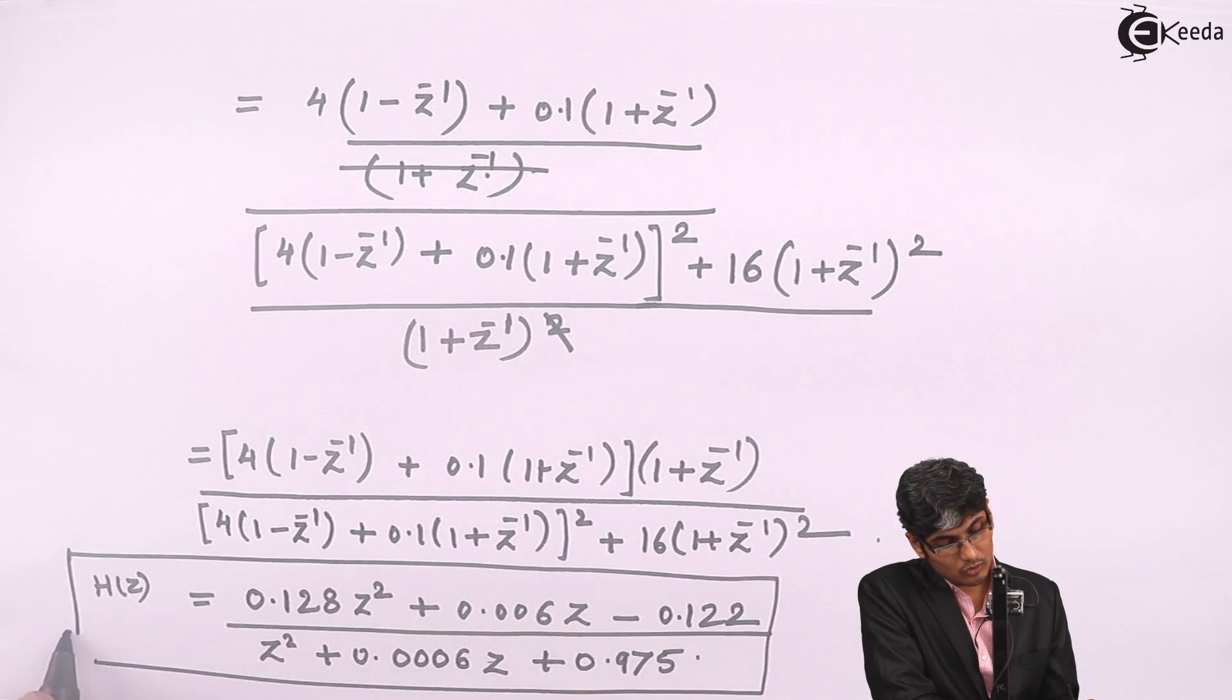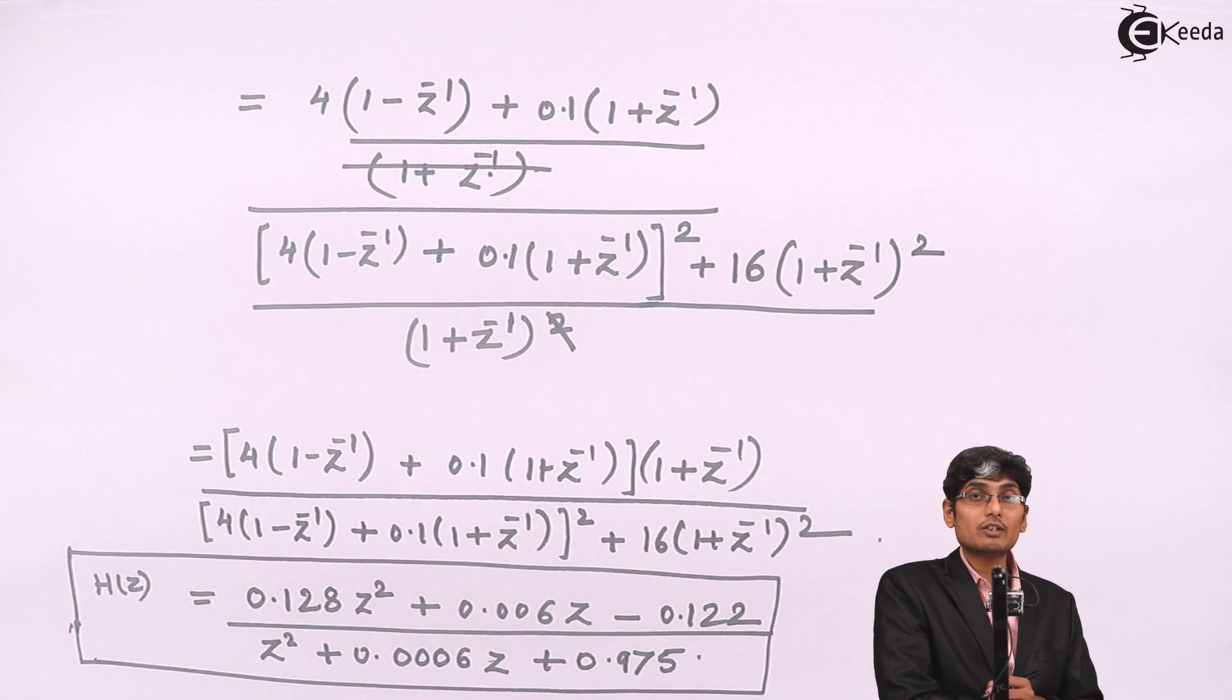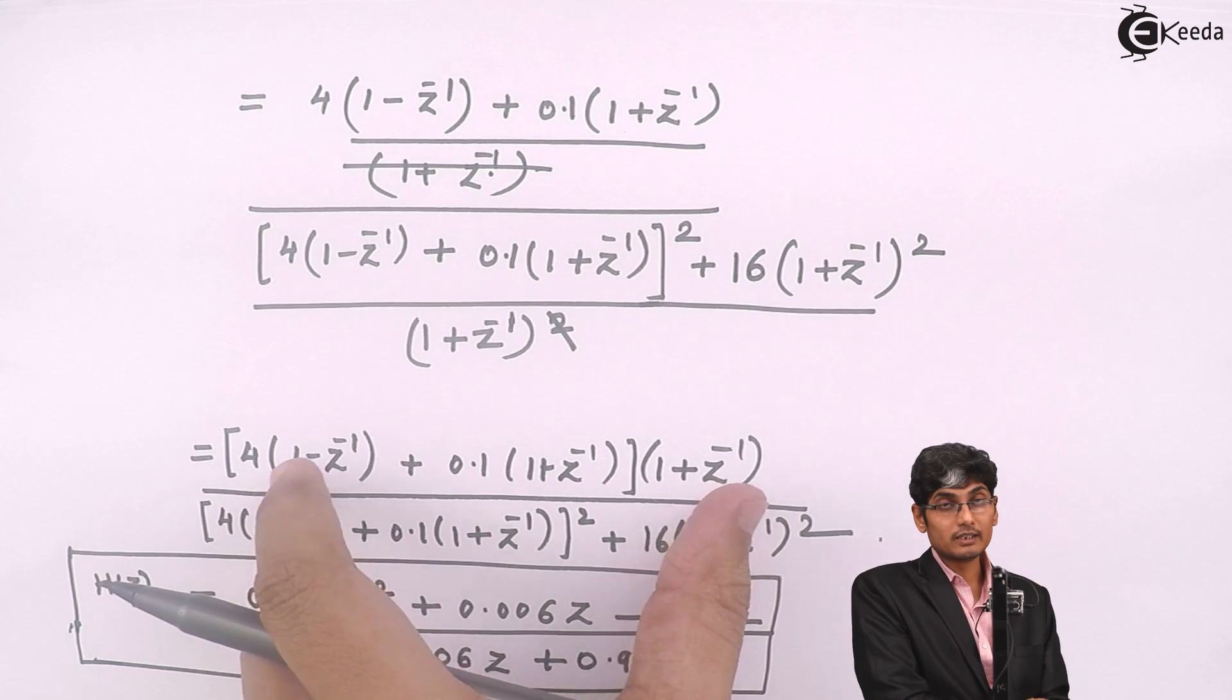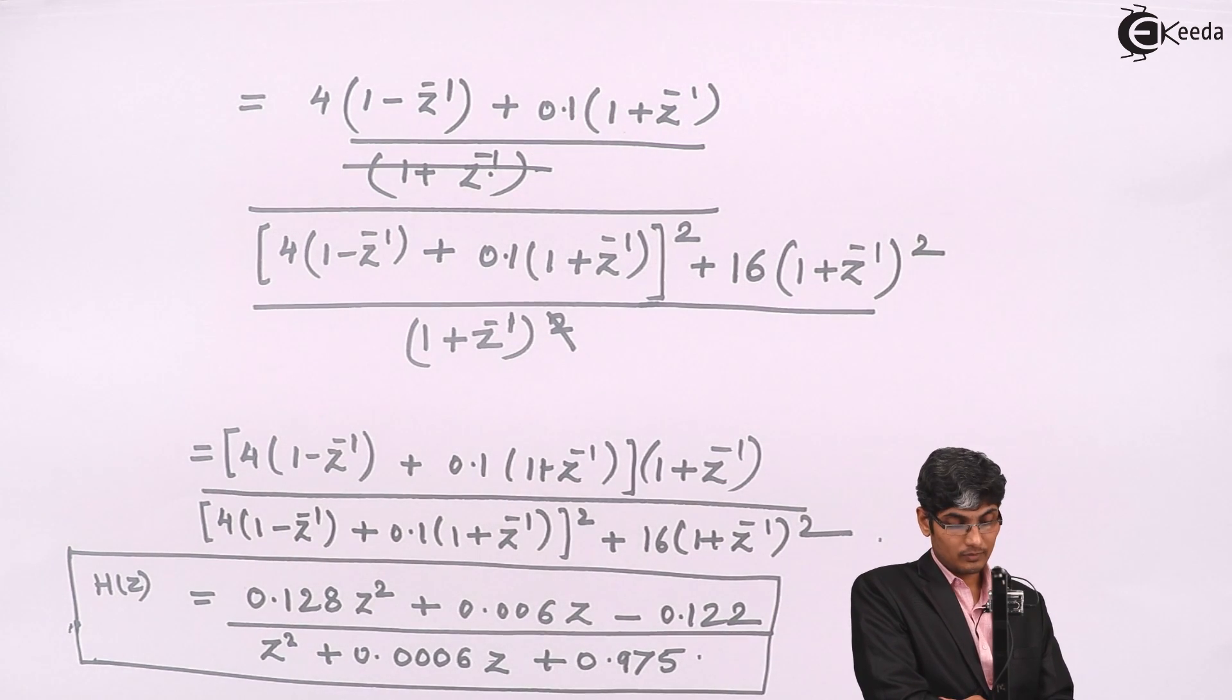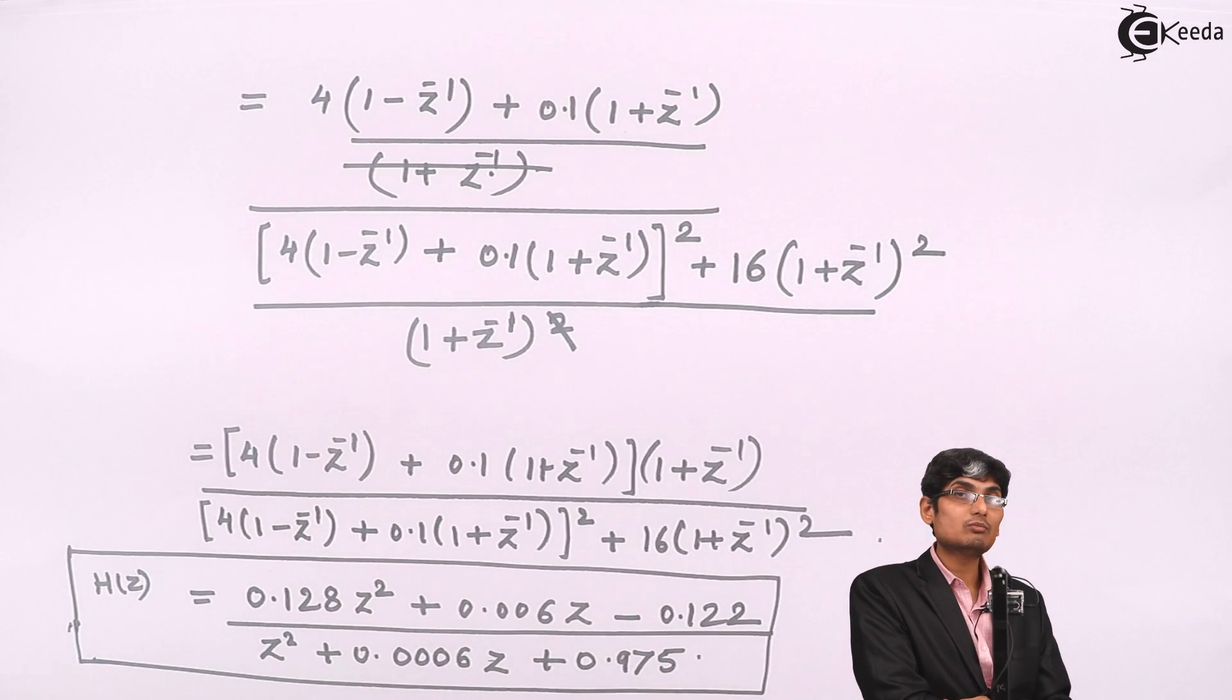If in exams you do not have enough time to solve this problem you can leave the problem at this step. There is no issues or you can go one step further and keep everything in terms of Z raise to minus 2 and leave the problem. There is no harm in that.